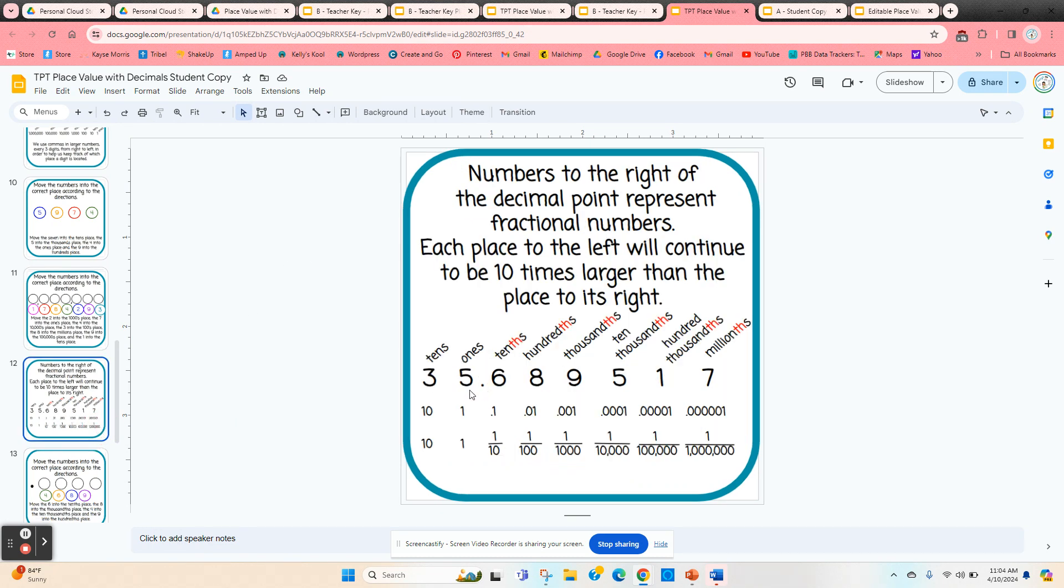Now we're shown a decimal. So we have here to the left of the decimal point ones, tens, and so on. And then to the right of the decimal point, you can see this 'th' we have in red.